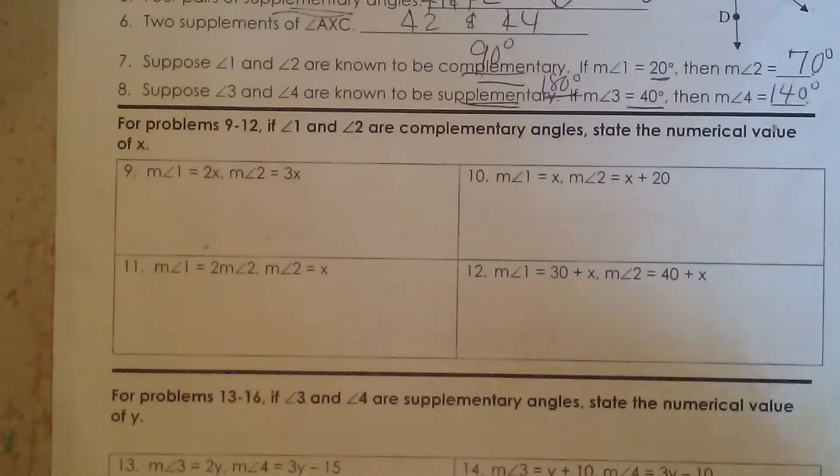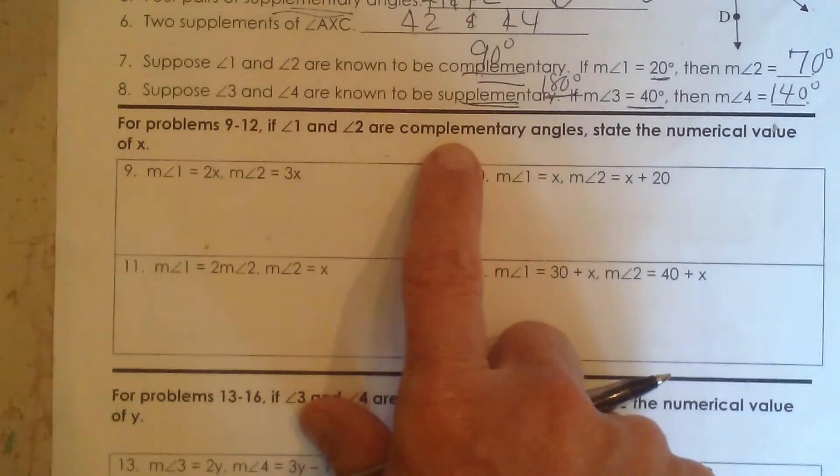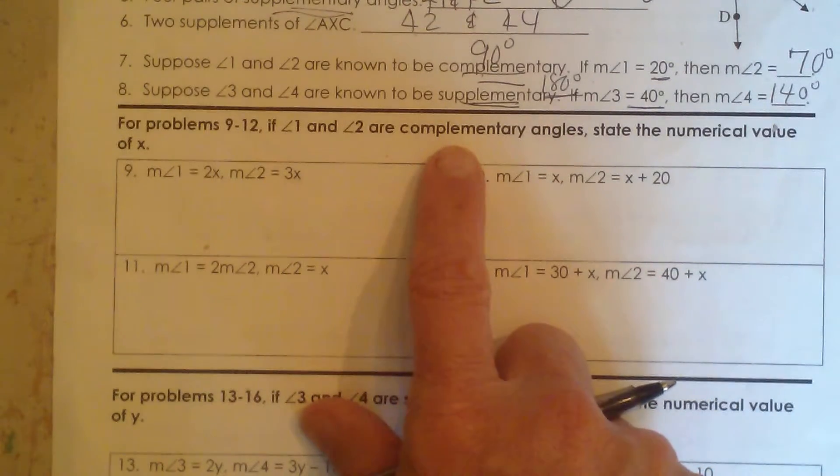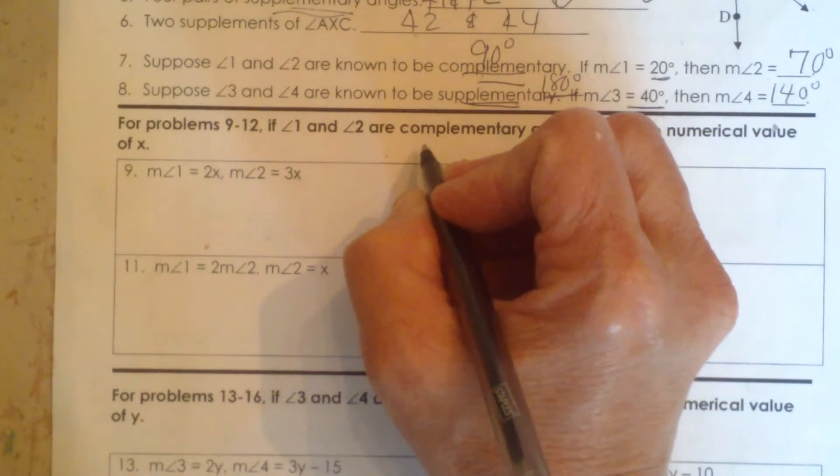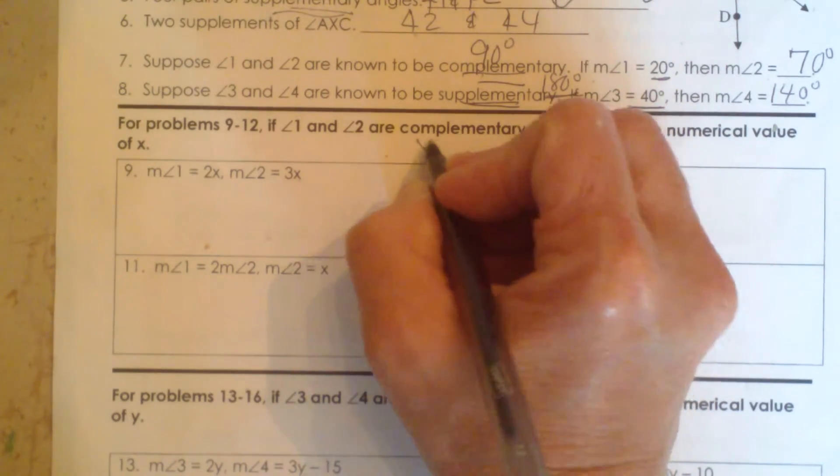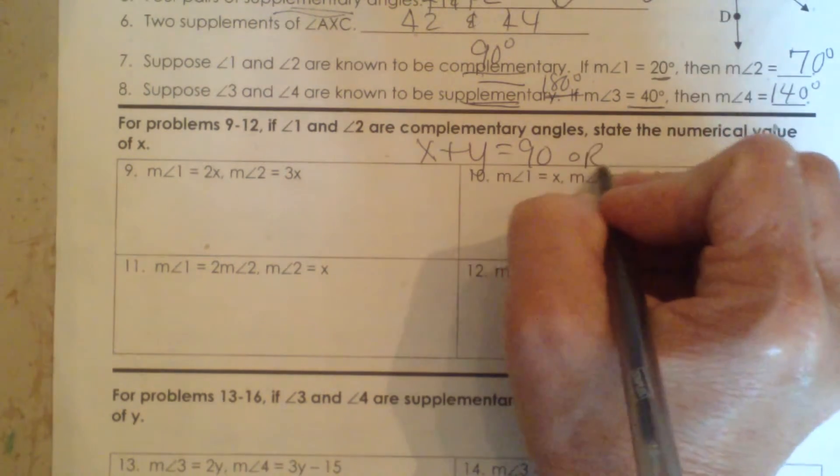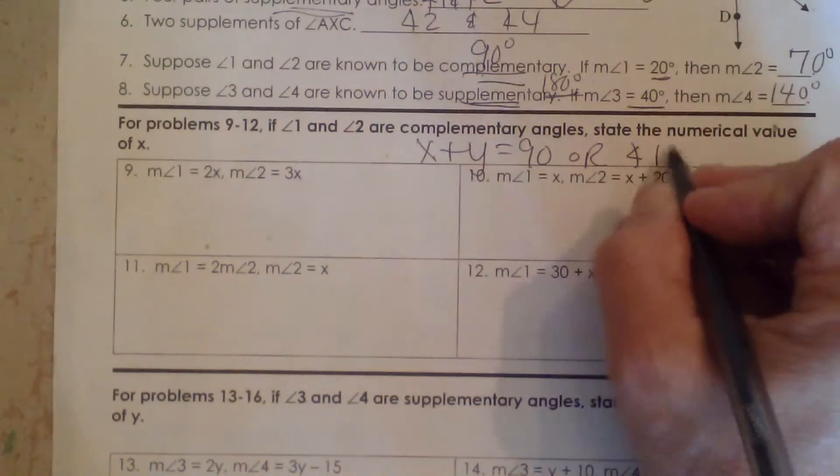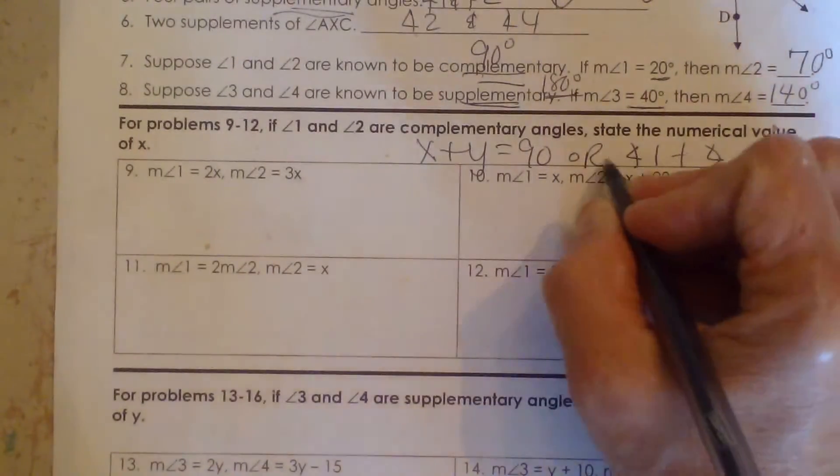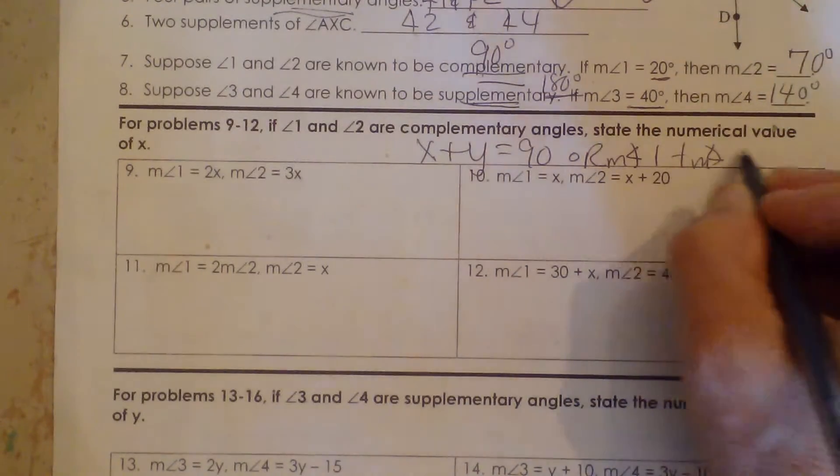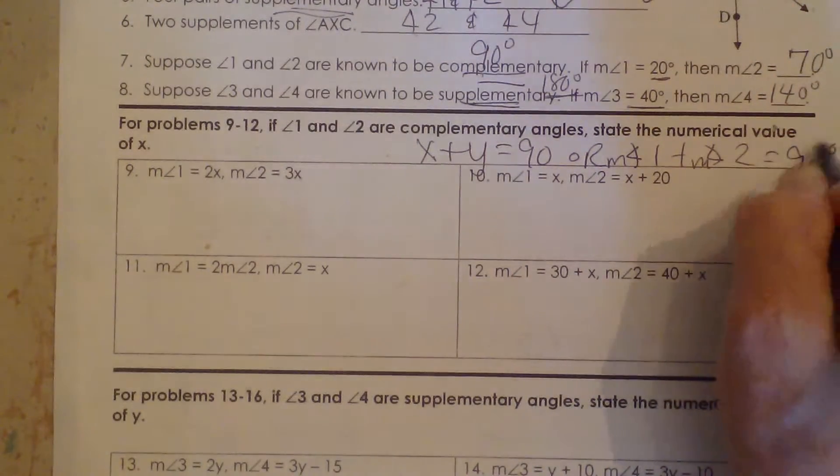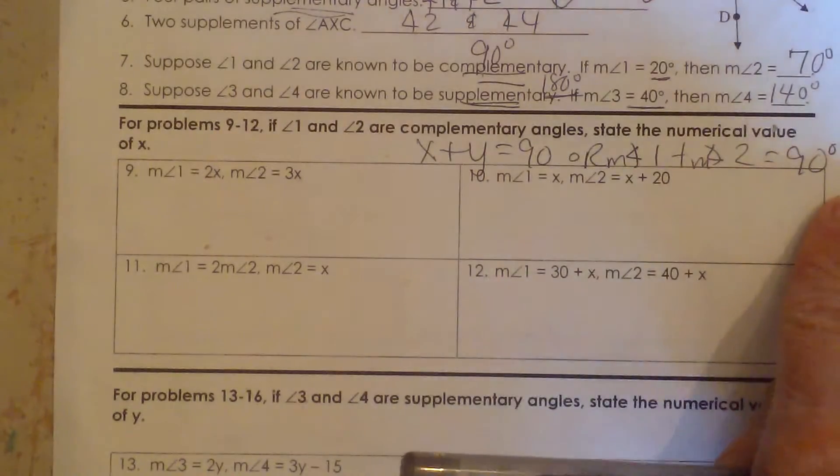Hi, welcome to Moo Moo Math. Today we're going to look at complementary angles. Complementary are two angles that add to 90 degrees. So x plus y is equal to 90, or the first angle, angle 1, plus the measure of angle 2 is equal to 90. So the measures of the angles add up to 90 degrees.